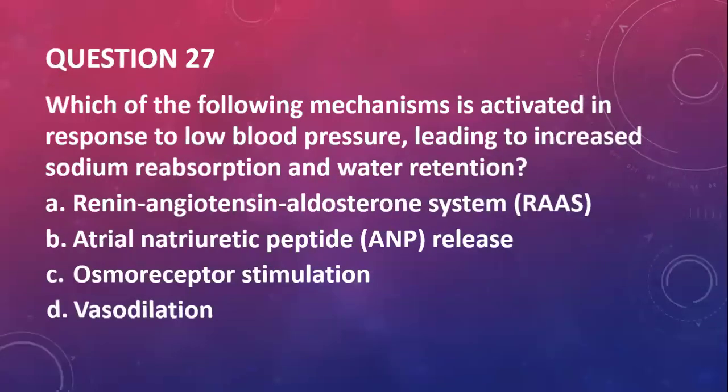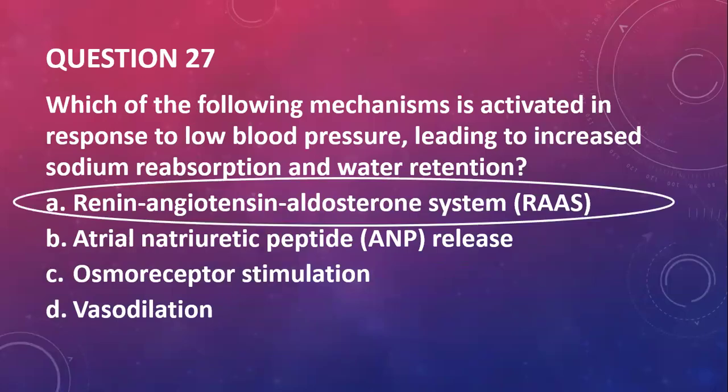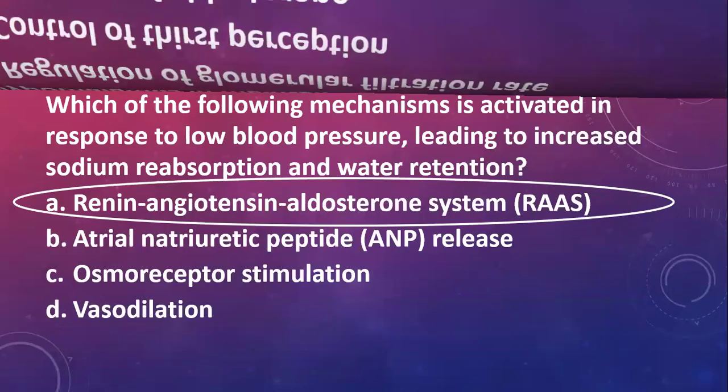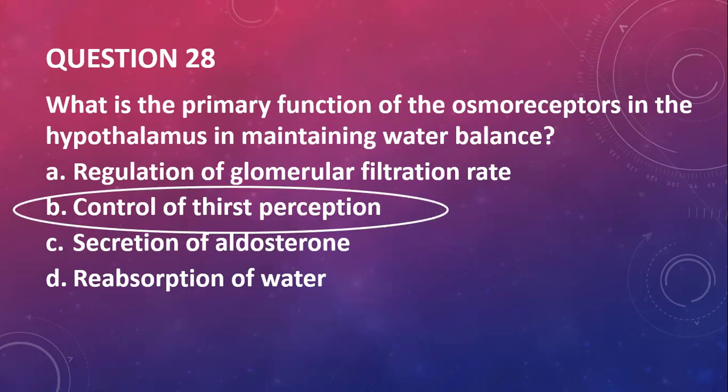Question twenty-six: what role does angiotensin-2 play in the regulation of water balance? Angiotensin-2 is found in the renin-angiotensin-aldosterone cascade. What it does is cause vasoconstriction, which leads to increased blood pressure. It also stimulates the secretion of aldosterone to promote reabsorption of sodium and therefore water indirectly. Question twenty-seven: which mechanism is activated in response to low blood pressure leading to increased sodium reabsorption and water retention? That will be the renin-angiotensin-aldosterone system.